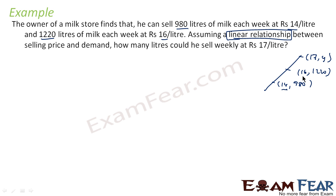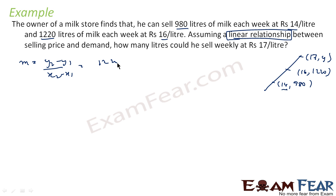When he was selling at 14 rupees per liter, he sold 980 liters of milk. When he was selling at 16 rupees per liter, he sold 1220 liters of milk. When he is selling at 17 rupees per liter, he will sell y liters. For this line, let us find the slope: slope = (1220 − 980) / (16 − 14) = 240 / 2 = 120.